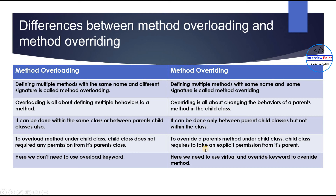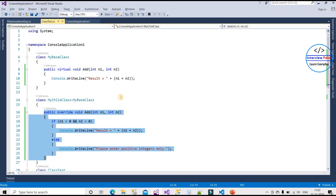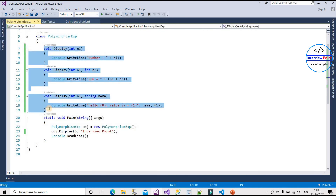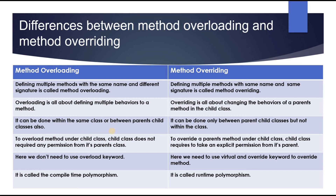The fifth difference: method overloading is called compile-time polymorphism, while method overriding is called runtime polymorphism. There is one more difference: in method overriding, the method must use the public keyword, whereas in method overloading, it is not mandatory — you can also create private methods when working with overloading.